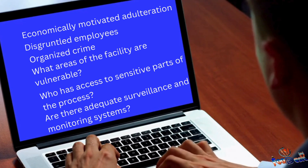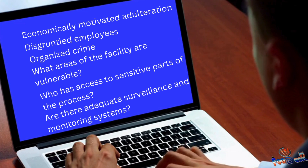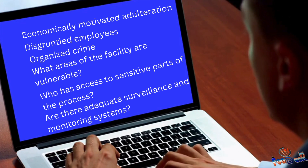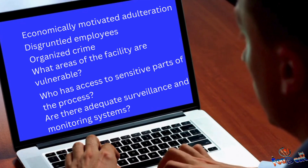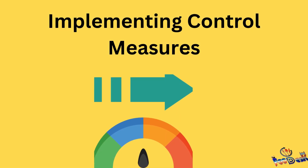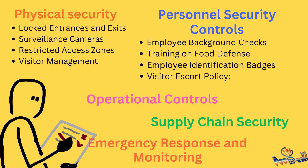Assessing these threats involves asking questions like: What areas of the facility are vulnerable? Who has access to sensitive parts of the process? Are there adequate surveillance and monitoring systems? Step 2: Implementing control measures. Once threats are identified, the next step is to implement control measures to address these vulnerabilities.